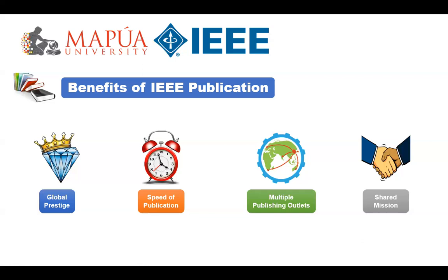Publishing your final article in IEEE Explore takes an average of 31 to 60 days after you provide your final article. You can also choose the right venue for your work by selecting from 150+ journals and transactions, 40+ magazines, 1,800+ conferences, and 1,600+ print and electronic books. As a not-for-profit organization, IEEE stands out from other scientific publishers in many ways. Based on my experience, IEEE is the quickest in the publication process.